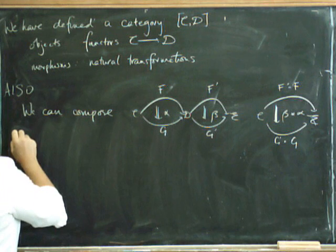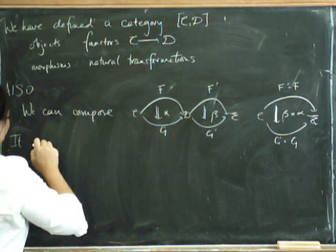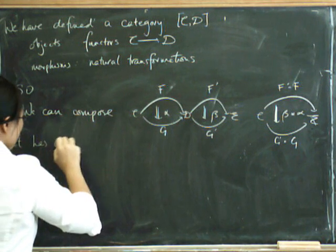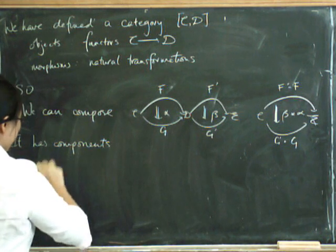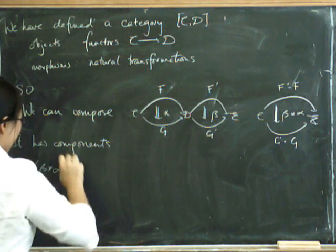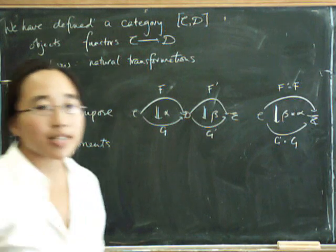How are we going to define it? We need to define it on components. Well, beta star alpha has to have a component at X. Now, where does it have to go?